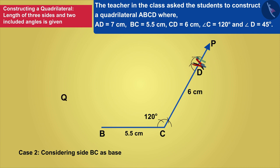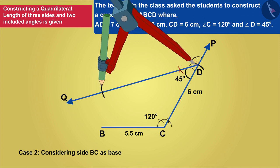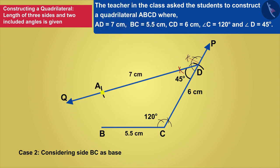Now, construct the angle QDC. Draw an arc of radius 7 cm by taking D as center, which will intersect DQ at point A.